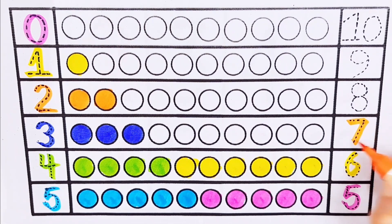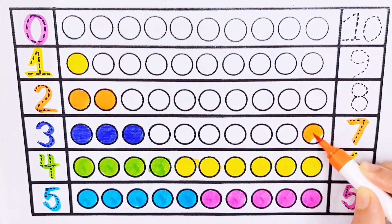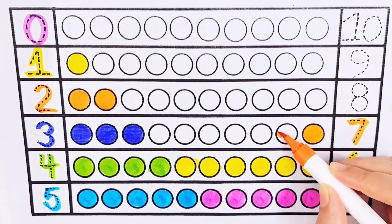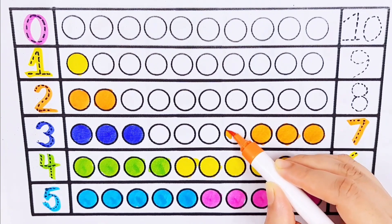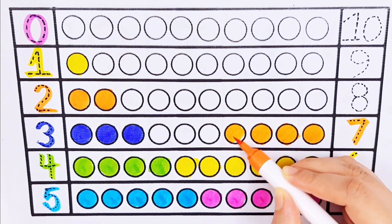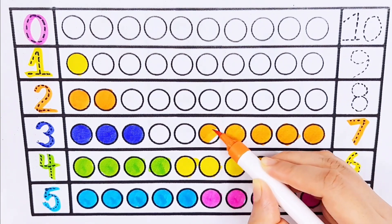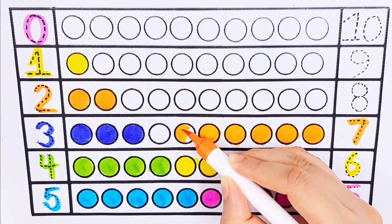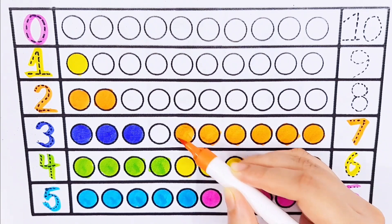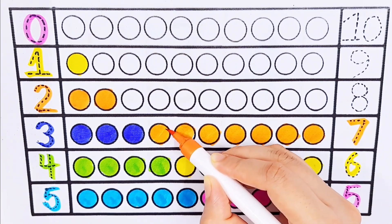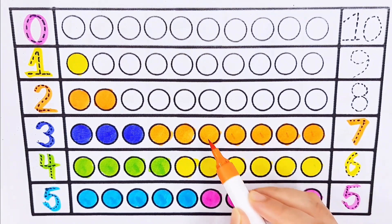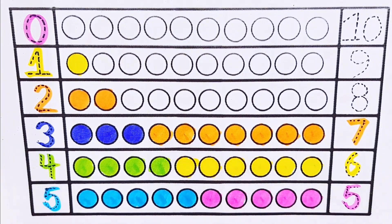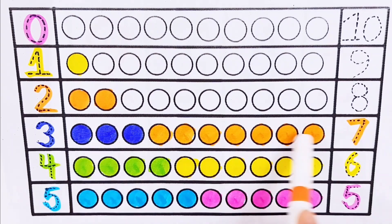Number seven. One, two, three, four, five, six, seven. Three plus seven equals ten.